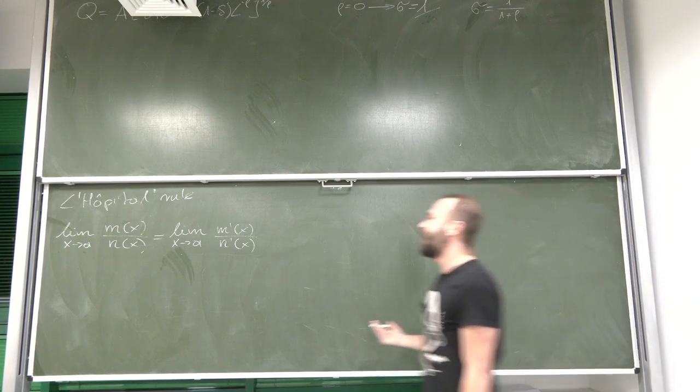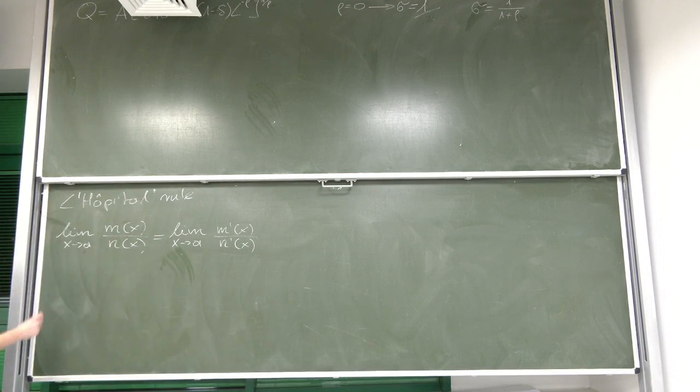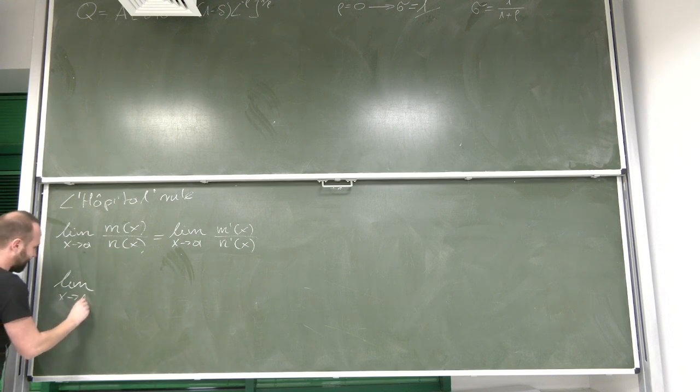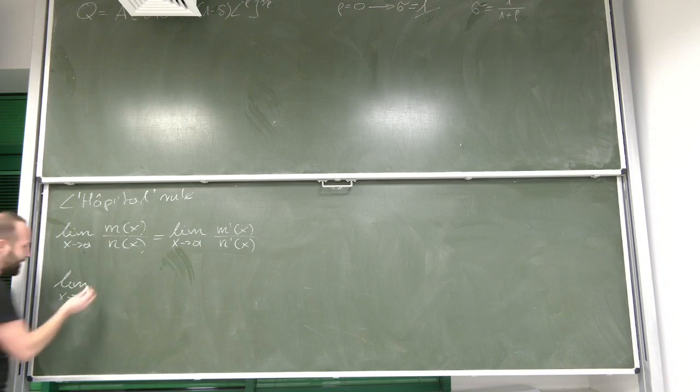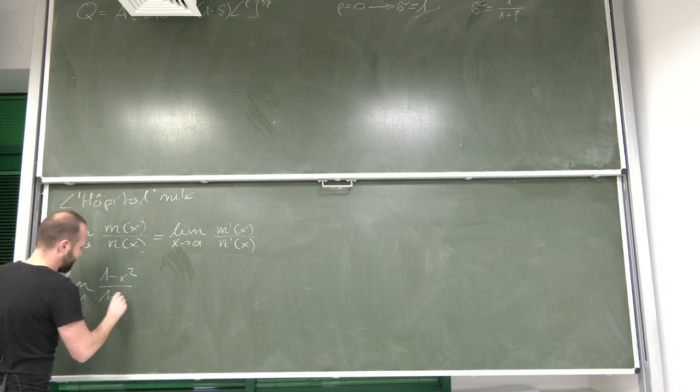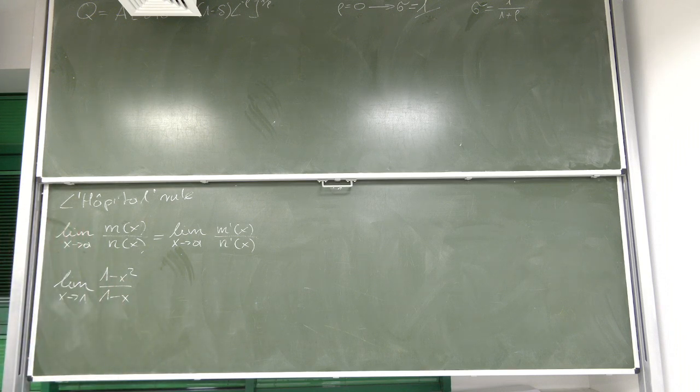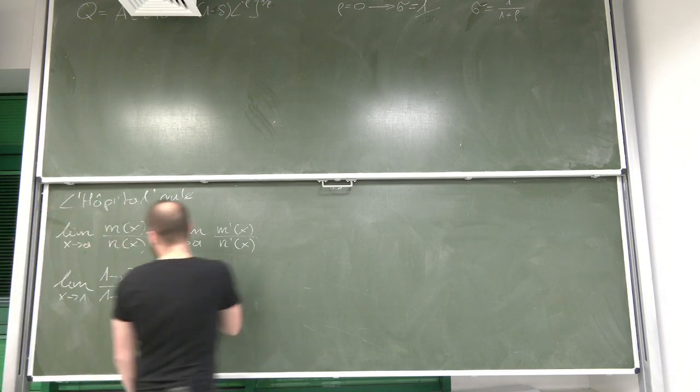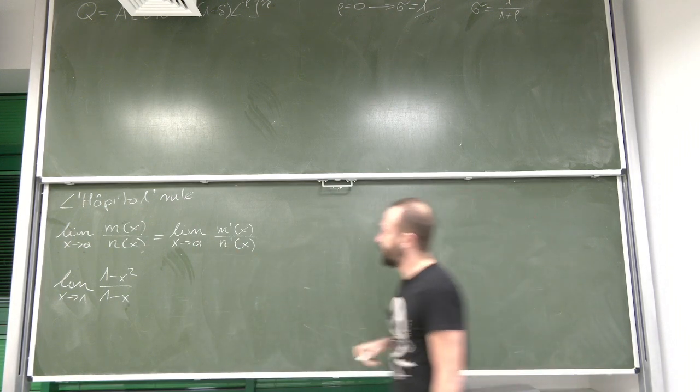Okay. Let's see how it works. Let's choose something that we know how to do. However, let's see if the rule works. Let's say we have a limit with x approaching one of the function 1 minus x squared over 1 minus x. Clearly, we can see that I cannot substitute here one because if I substitute here one, I'm going to get zero in the denominator. This is bad.